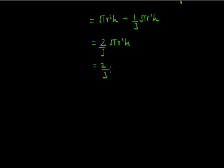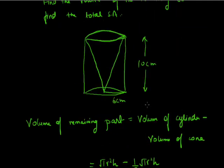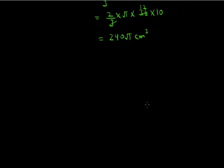Solving: (2/3) × π × 36 × 10 — cancelling 36 by 3 gives 12, so 2 × π × 12 × 10 = 240π cm³. This is the volume of the remaining part after the cone is removed from the cylinder.